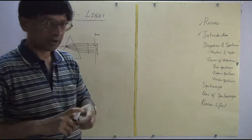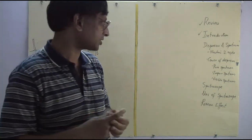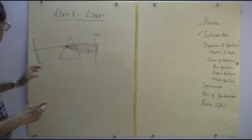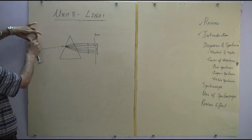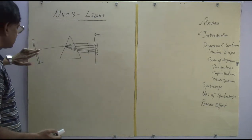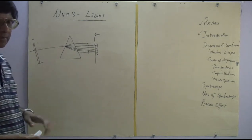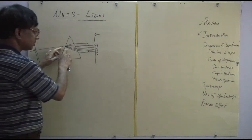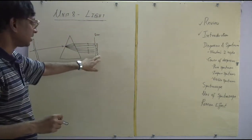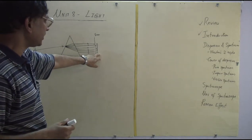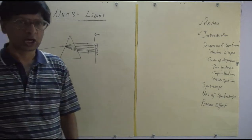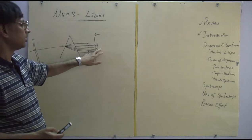Let us look at this diagram which has a prism at the center. There is a narrow slit in a cardboard and sunlight comes in through it. The sunlight passes through this hole, falls onto the prism, and this prism splits the composite color into its constituent colors. On a screen placed on the other side I would get a band of colors: violet at one end and red at the other. The order can be remembered as VIBGYOR — violet, indigo, blue, green, yellow, orange, and red.